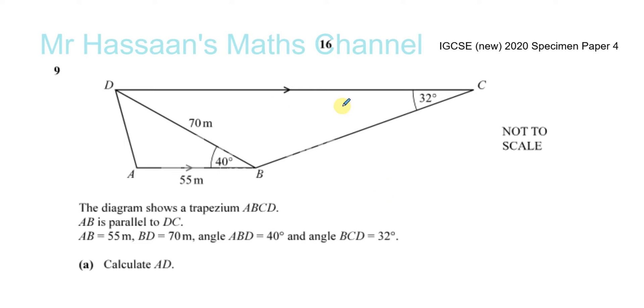Calculate the length of AD. So here we have to find this length. Let me call this X for now. Now when you see a situation like this, you have a non-right angle triangle. So you cannot use Pythagoras' theorem here. It has to be a right angle triangle. Even if something looks like it's right angle, but you don't know that it's right angle, you cannot use Pythagoras' theorem on that.